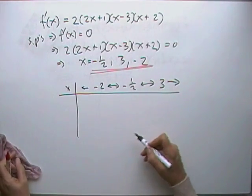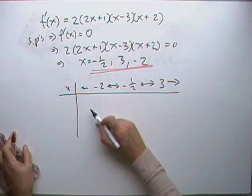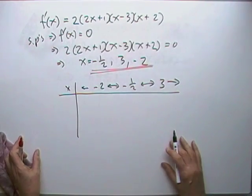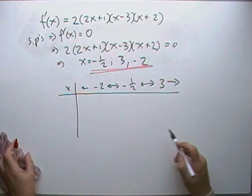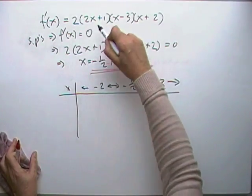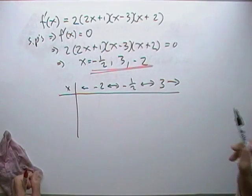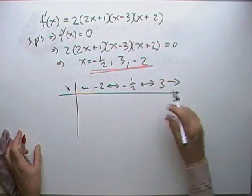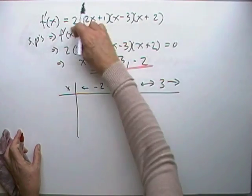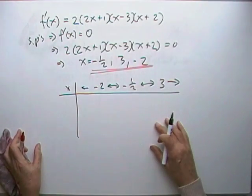Something happens at negative two, something happens at negative a half, and something happens at three. And whatever was happening before negative two will continue happening forever. However it's going when it leaves negative two, it'll be doing the same thing when it arrives at negative a half. So I don't need to consider the neighbourhoods in this case because it's a well-behaved, smooth, differentiable function. And the same here and the same above it. Now, what I'm not going to do is pick a number, some number before negative two, something like negative three, and then go through all this working out the answer.